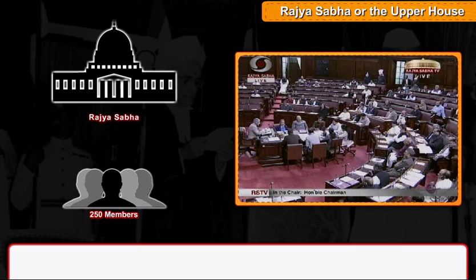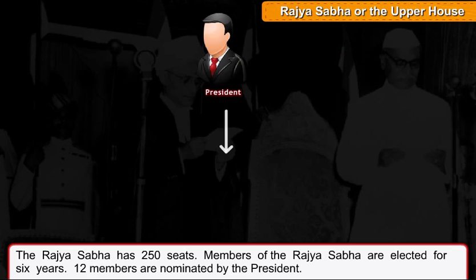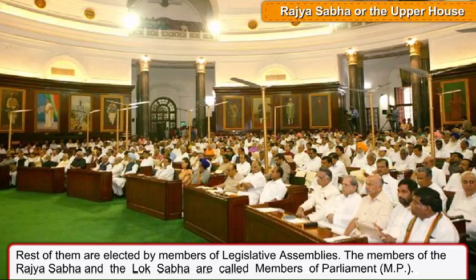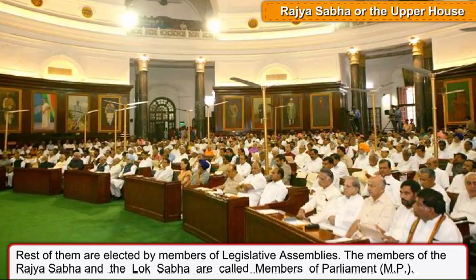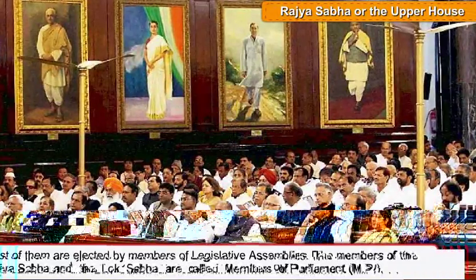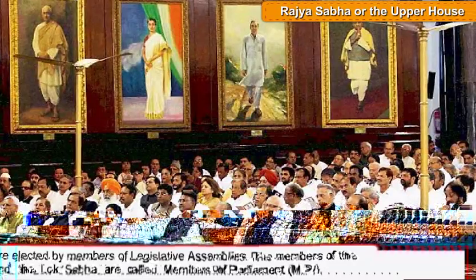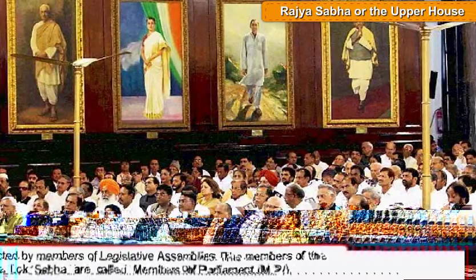The Rajya Sabha, or the Upper House, has 250 seats. Members of the Rajya Sabha are elected for six years. Twelve members are nominated by the President, and the rest are elected by members of Legislative Assemblies. The members of the Rajya Sabha and the Lok Sabha are called Members of Parliament, or MPs.